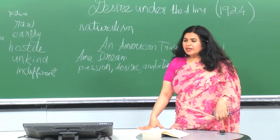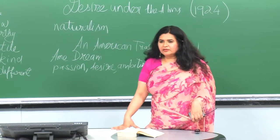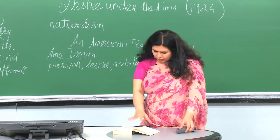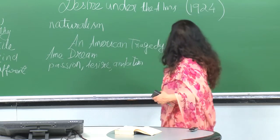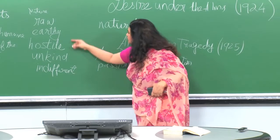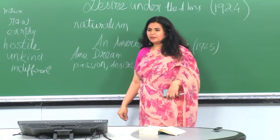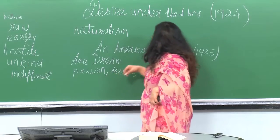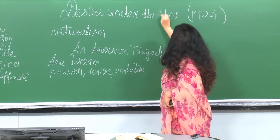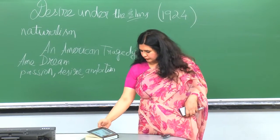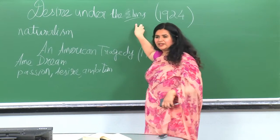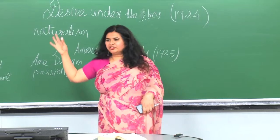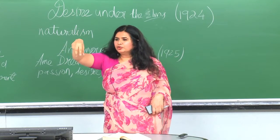There is another Greek play that Desire Under the Elms derives from, which we will approach later. Now, nature has been described as raw, earthly, hostile, and unkind. We also have the term pathetic fallacy — when nature assumes human attributes. The elms are tall, thin trees that droop at the top. Look at how the opening stage directions describe them.